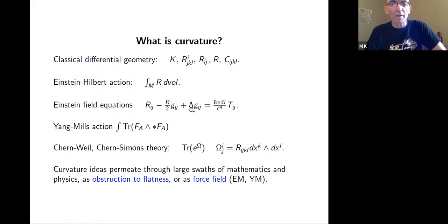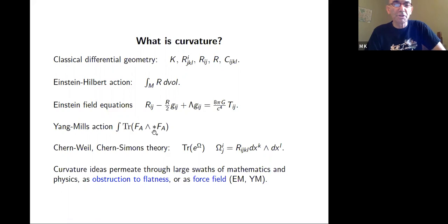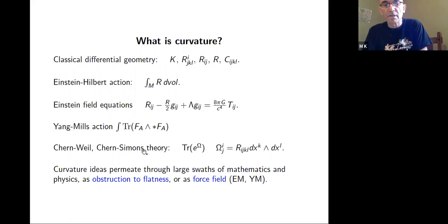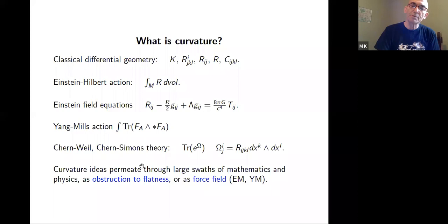There is also Yang-Mills action, which involves curvature for vector bundles, principal bundles, G-bundles. There is also Chern-Simons theory, where curvature appears and interacts with topology. There is a theory of characteristic classes — Chern character, Chern classes, all kinds of characteristic classes — through Chern-Weil theory. So curvature ideas really permeate through large sections of mathematics and physics. They appear as obstructions to flatness, as force fields in Yang-Mills theory, in electrodynamics, in the standard model.